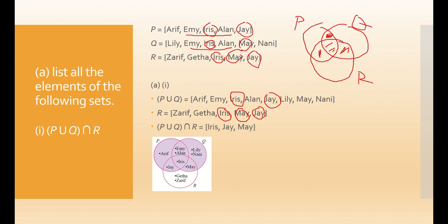After filling in the rest of the elements, P union Q covers the whole area of set P and set Q. To find the intersection with set R, shade set R and look at the overlapping shaded region. The intersection of the shaded parts gives the answer for P union Q intersect R, which is the region in the middle.